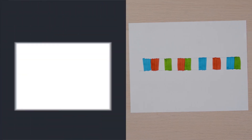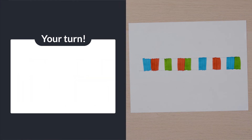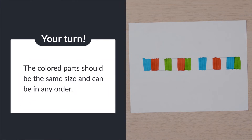Can you draw and color the pathway your bot will move along? Remember to include all four colors: white, green, red, and blue. The colored parts should be the same size and can be in any order.